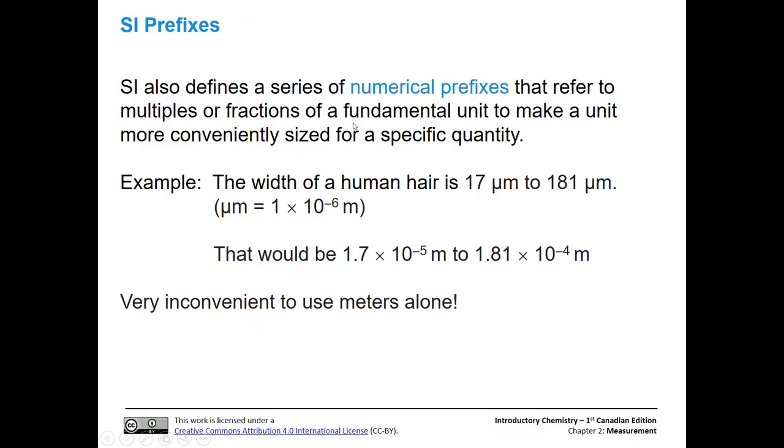SI also defines a series of numerical prefixes that refer to multiples or fractions of a fundamental unit, and it makes that unit more conveniently sized for a specific quantity. If we're talking about human hair, which is really fine, and we said it was 1.7 times 10 to the negative fifth meters, that's inconvenient. But if we use the micrometer prefix, then we could say it's 17 micrometers. One micrometer is one times 10 to the negative six meters. That makes it much easier to communicate our width of a human hair.